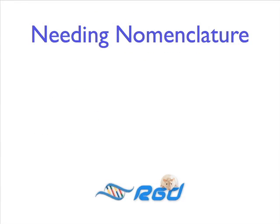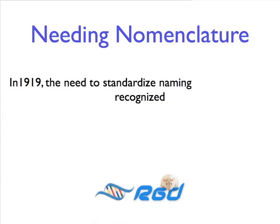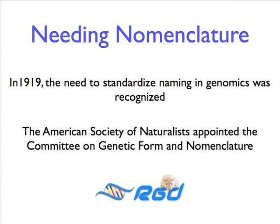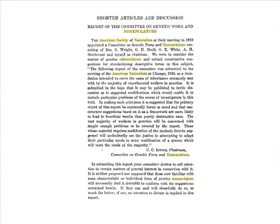The need for standardized nomenclature for biological entities, whether genes, alleles, QTLs, strains, or markers, has long been recognized in segments of the research community. As early as 1919, the American Society of Naturalists saw the need for standardization of genetic nomenclature, and appointed the Committee on Genetic Form and Nomenclature headed by C.C. Little, the founder of the Jackson Laboratory. The report of that committee was published in 1921, but it had little effect.